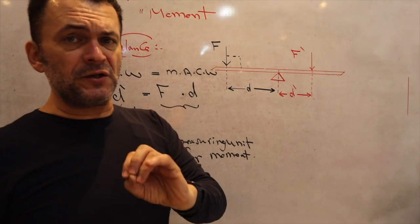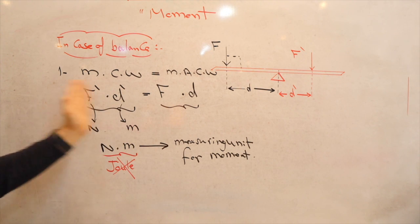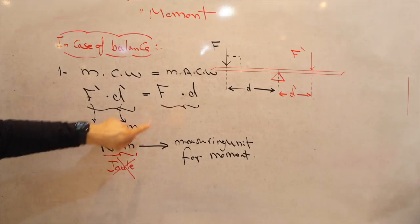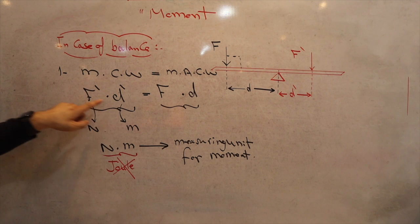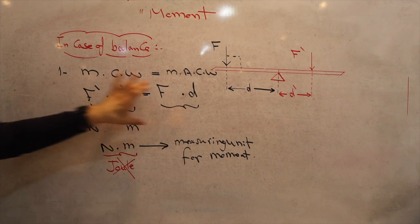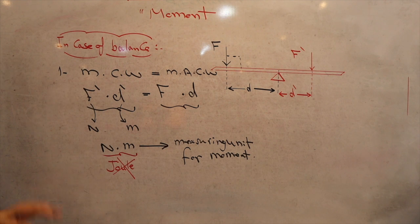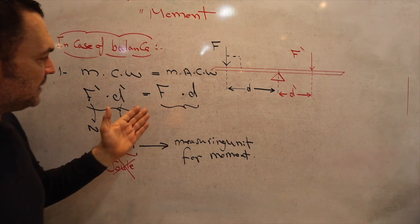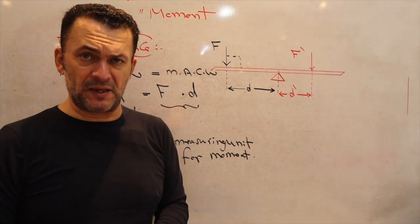Typically in IGCSE questions, they will give you three of the four variables and ask you about the fourth one. For example, they may ask about the force if you know both distances and the other force. You just write what you have, keep the unknown as a symbol, then solve the equation like algebra to find the missing value. That was Condition number one to keep the system in balance.